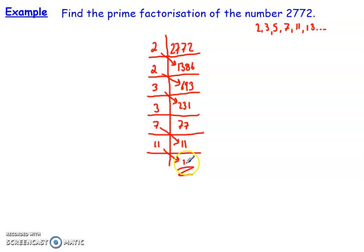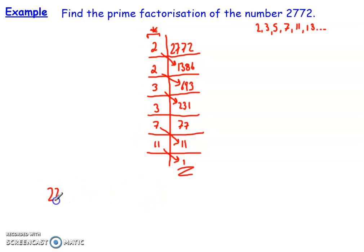Now that we're at 1, we can stop. The final number to divide is 1, so that is the final step. Essentially, this means I've got this column times 1 and I can't factorise it anymore. What you're then able to do is take your original number and represent it as the product of all the numbers in this column. So that tells me that 2772 equals 2 × 2 × 3 × 3 × 7 × 11.